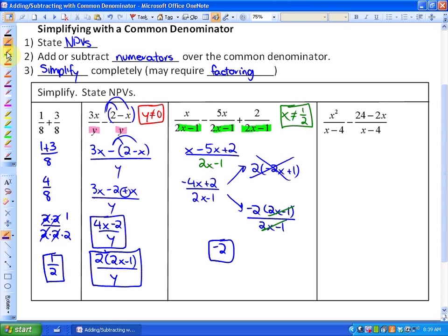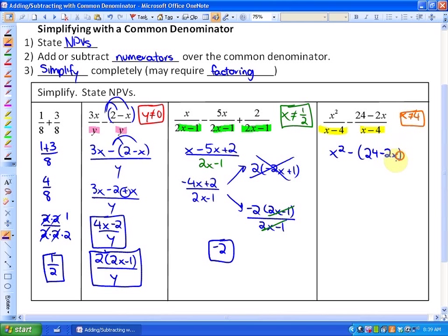In our final example, our non-permissible values, since we have a common denominator of x minus 4, would be that x cannot equal 4. Our simplest form would be x squared minus, and we need to take the opposite of both terms in the numerator of our second rational expression, over x minus 4. That would be x squared minus 24 plus 2x, all over x minus 4.